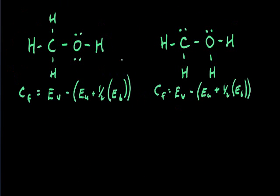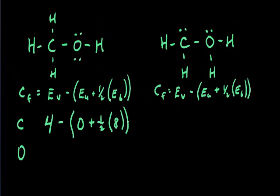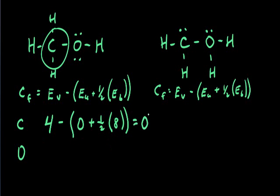Let's calculate formal charge for our carbon and oxygen atoms in the structure on the left. We won't need to do hydrogen — hydrogen's formal charge will always be the same, given it has only one bond in all Lewis structures. Our first carbon atom: carbon has four valence electrons. In our structure, we have zero unshared electrons on it, and the four bonds attached to carbon give us a total of eight bonding electrons. Calculating the formal charge, we get a value of zero for carbon.